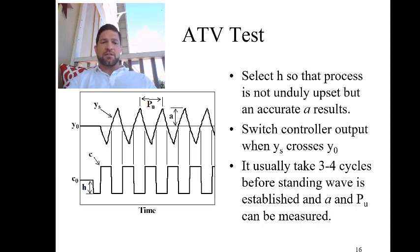And so we do this for a few cycles until we have a standing oscillation shown here. So when we have a standing oscillation we can then use the values. We have our H value which is the change in the controller output. We have the value shown here A which is the amplitude of the oscillation. And then we have this value PU which is the period of oscillation that was established.